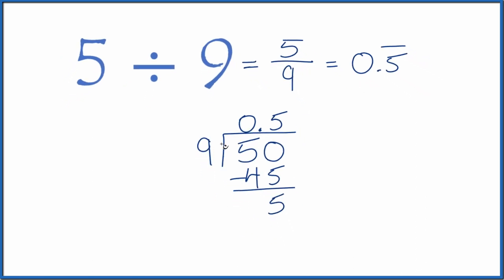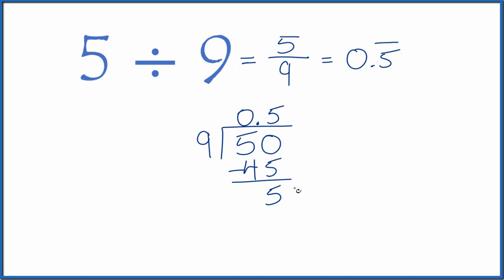We have 5. 9 doesn't go into 5, so let's call it 50, move over one decimal place, and 5 times 9 is 45. You can see what's happening. We're going to keep getting 5 each time. This number just keeps going out.